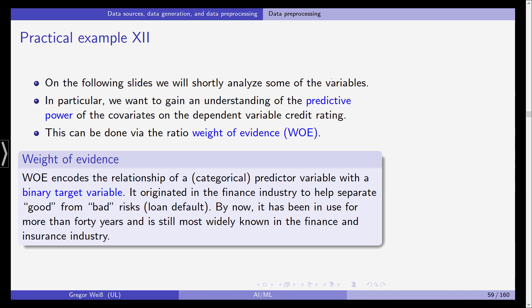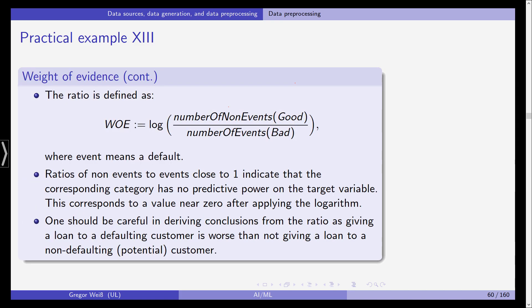So we'll use weight of evidence ratios and in our case it's defined as the logarithm of the number of non-events which in this case is a good rating, there is no default, divided by the number of bad events. So that's a bad rating.